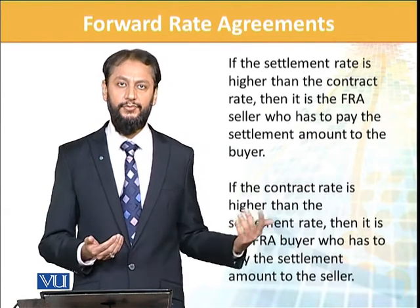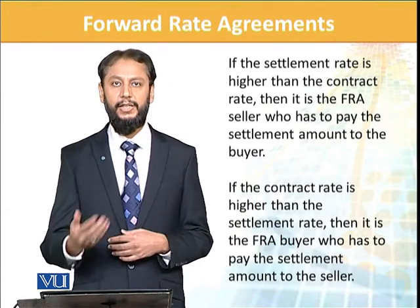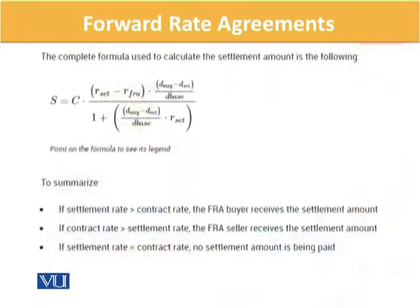If the contract rate is higher than the settlement rate, then it is from the buyer — پھر اس کو pay کرنا پڑے گا — and he'll pay the difference۔ یہ آپ diagram دیکھیں تو calculation آپ یہاں سے نظر آ سکتے ہیں۔